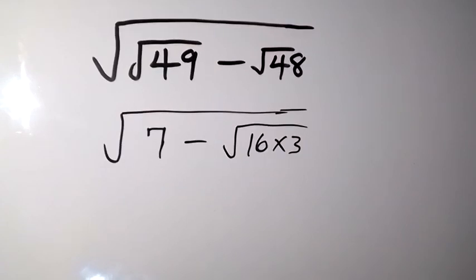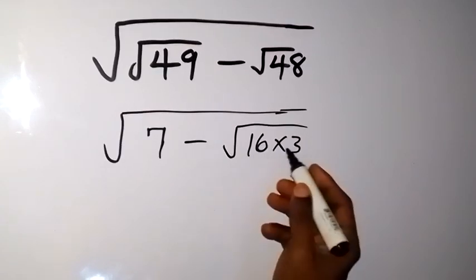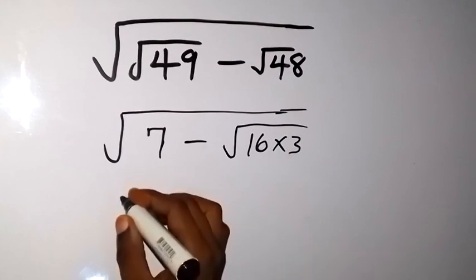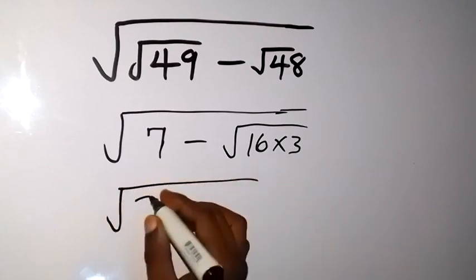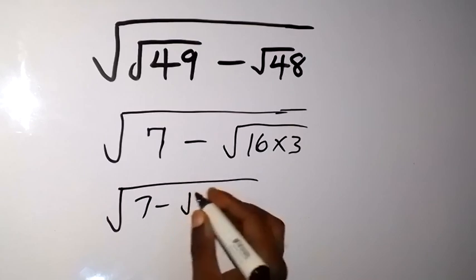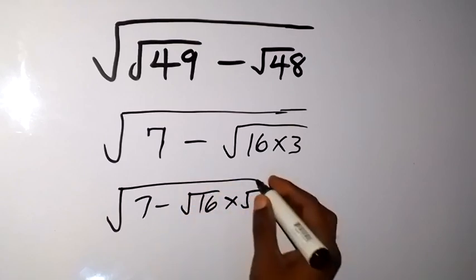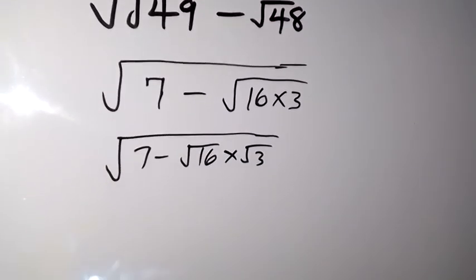When we look into this, we see that we can break this one into two roots and say this will be root 7 minus root 16 times root 3. And root 16 is 4, so we can write it and say this will be